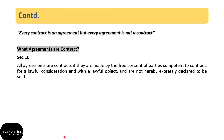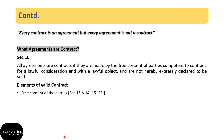So the important elements of a valid contract: first of all, free consent of the parties. Free consent is dealt with from Section 13 to Section 22, wherein Section 13 defines what consent is, and Section 14 says when consent is not free — that is, in what circumstances consent is vitiated. Consent is vitiated if it is given under undue influence, coercion, misrepresentation, fraud, or mistake. Sections 15 to 22 define all these terms and their consequences if the contract is vitiated by any of these reasons.